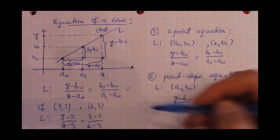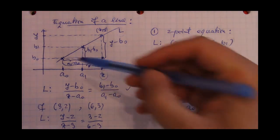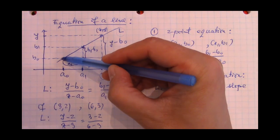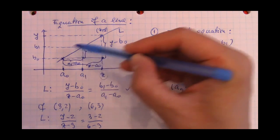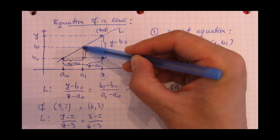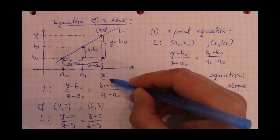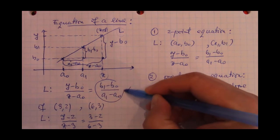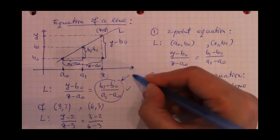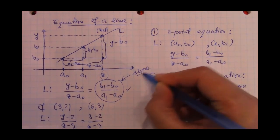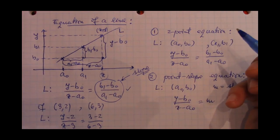So this is the equation of the line that goes through this point whose coordinates are a0 and b0 and this point whose coordinates are a1 and b1. Now, we can actually refer to this particular fraction as the slope of the line.